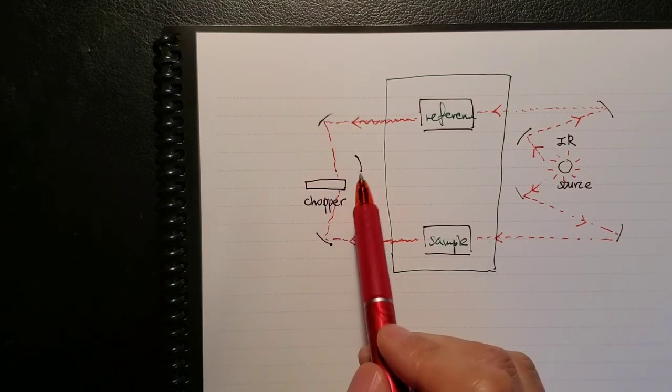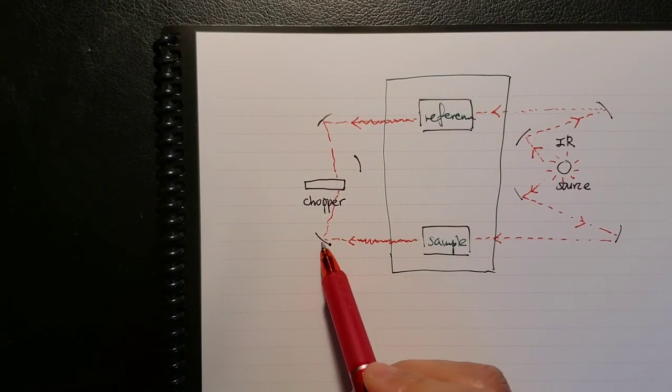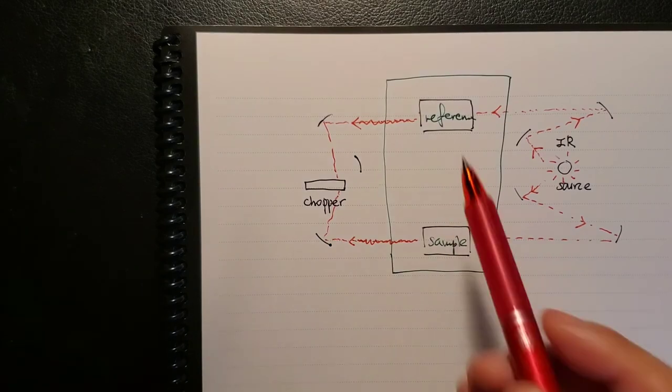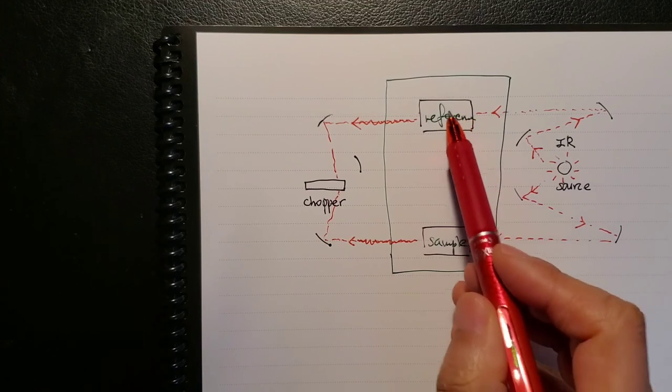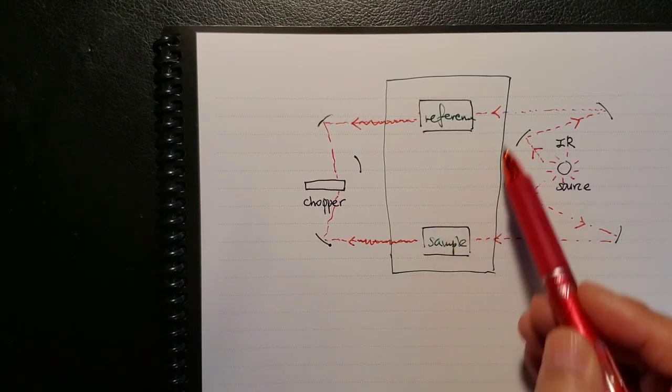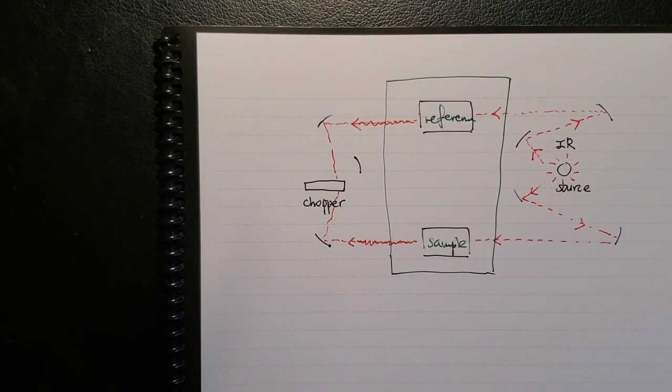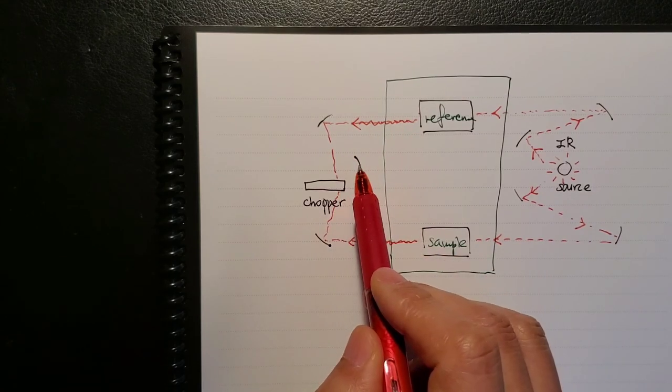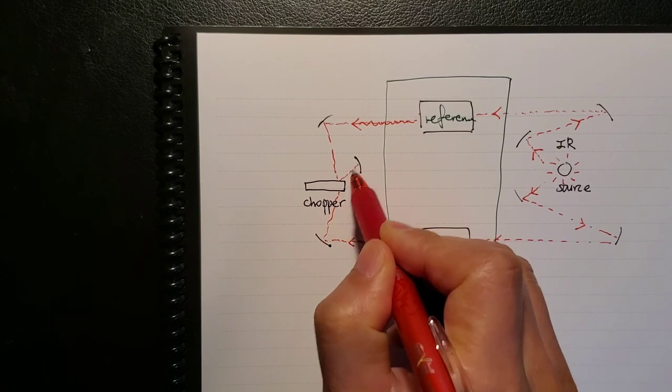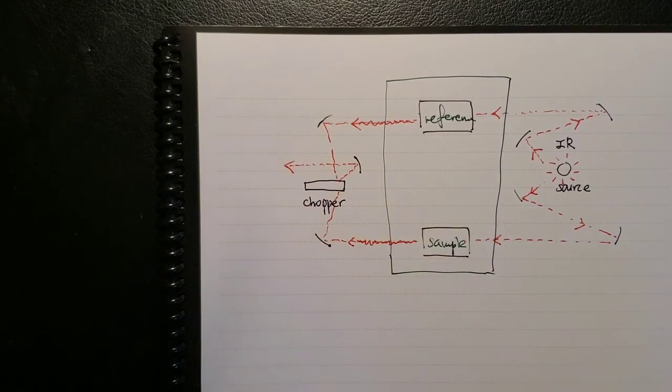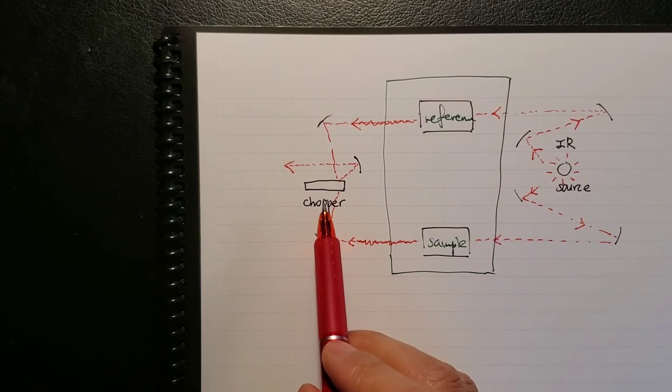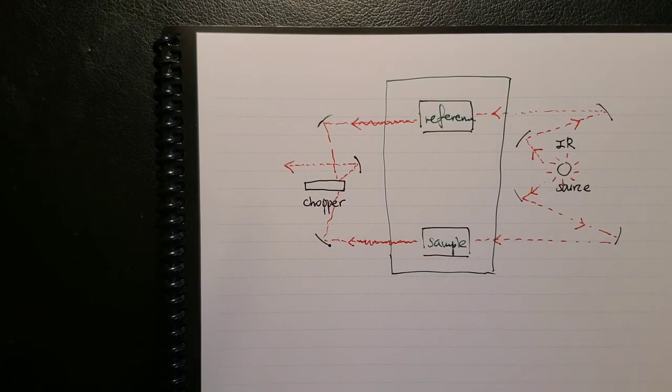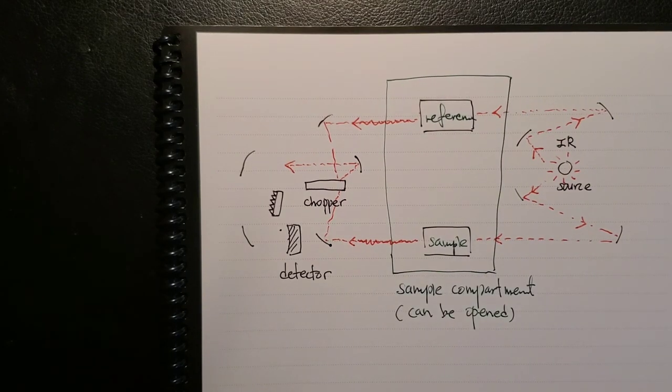You find more mirrors that guide light to the choppers. The output lights from reference or sample will be different from the input light after interaction with the physical object. When they reach the chopper, the chopper allows the machine to know which light is leading to this mirror and heading to the detector. The chopper allows the machine to bring in reference or sample light.